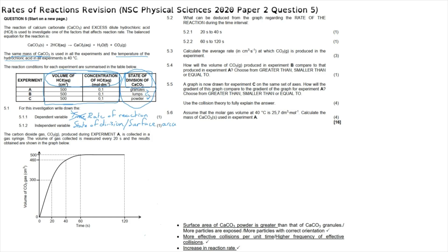Question 5.2.1 asks what can be deduced from the graph regarding the rate of reaction during the time interval 20 to 40 seconds. From 0 to 20 seconds the graph is essentially a straight line, representing a roughly constant rate. From 20 to 40 seconds the gradient starts to decrease. A decreasing gradient means the rate is slowing down, so the rate of reaction is decreasing during this interval.